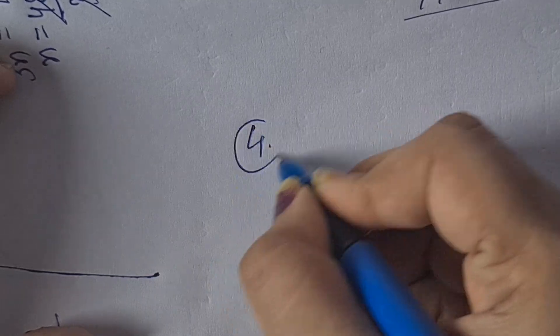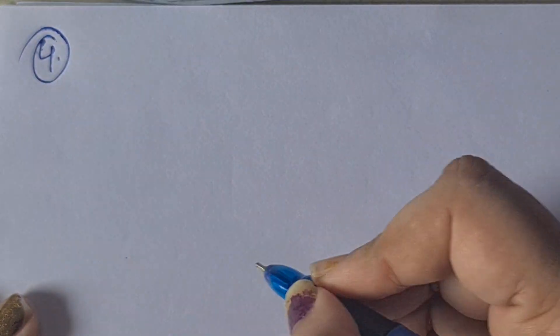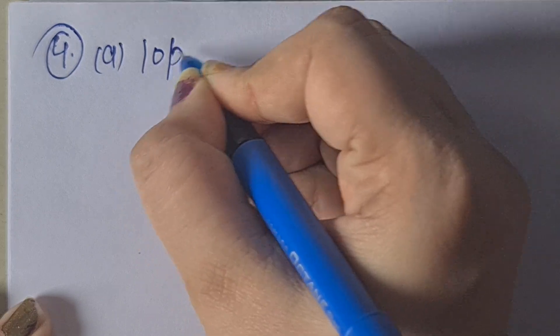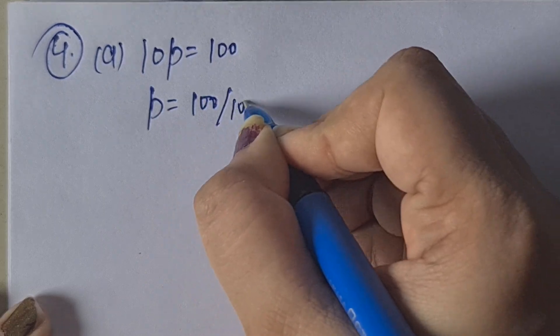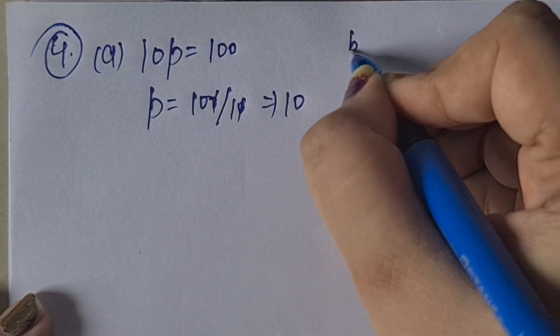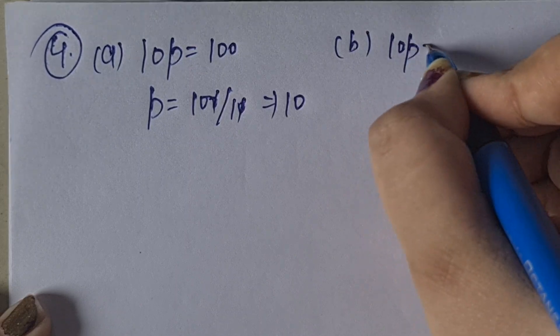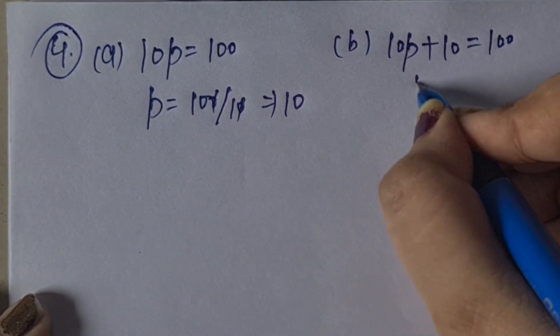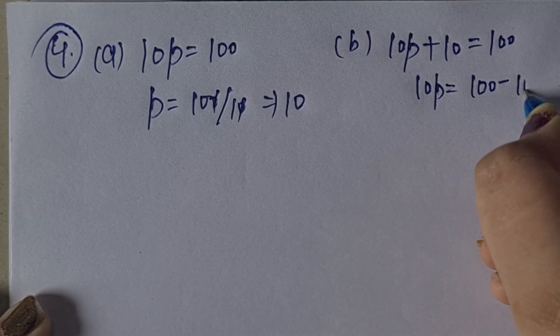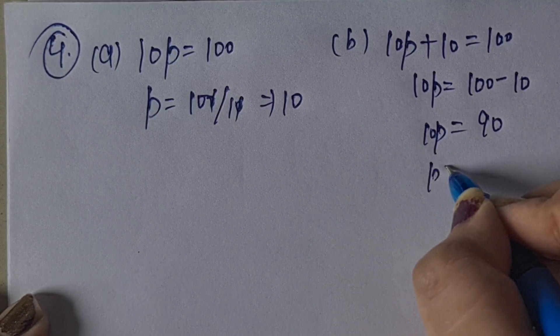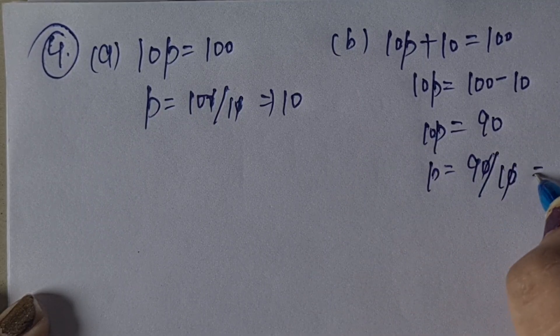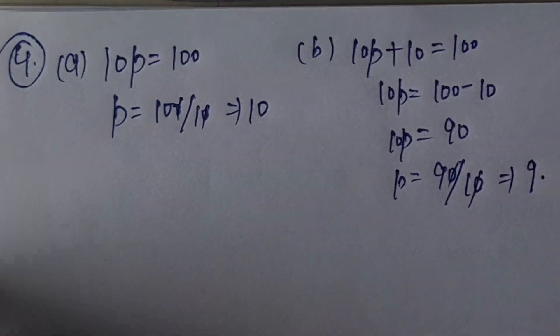Now Question 4: solve the following equations. A: 10P = 100. It is in multiplication, so divide: P = 100 upon 10 = 10. B part: 10P + 10 = 100. So 10P = 100 minus 10 = 90. P = 90 by 10 = 9. C part: P upon 4 = 5. Division becomes multiplication, so P = 5 into 4 = 20.